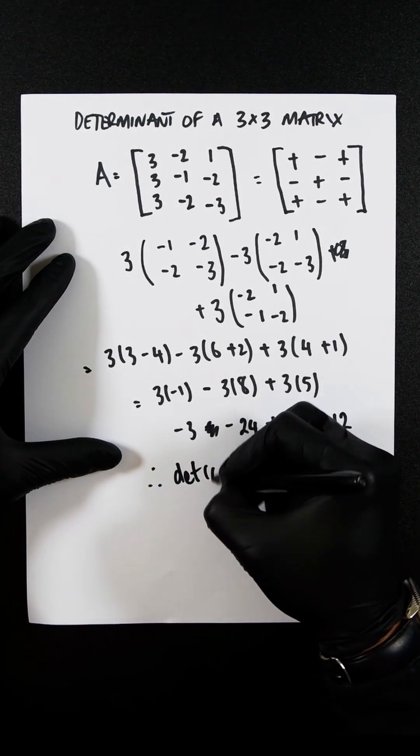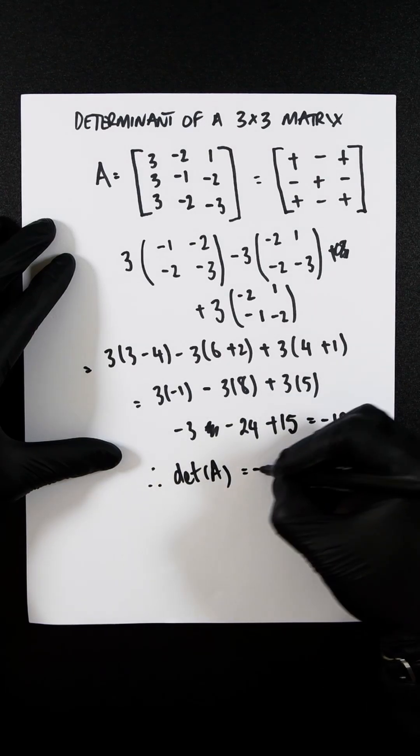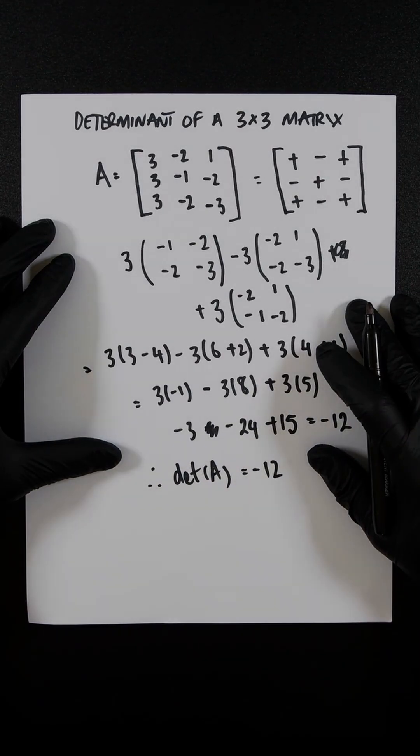So therefore, the determinant of A is minus 12. Simple and easy. That's what I want to make so much more easy.